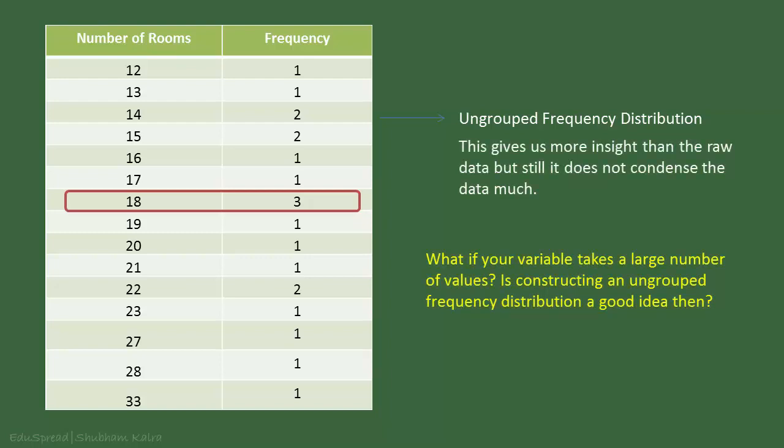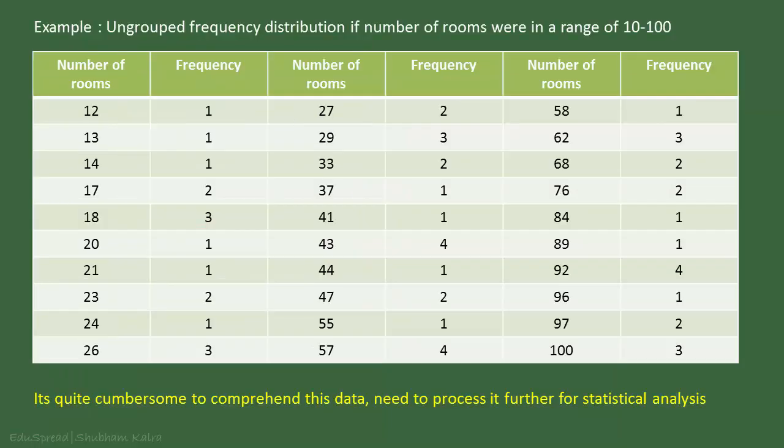The presentation of data in this form gives us more insight than the raw data. But still, it does not condense the data much. Also, if your variable takes values in a wide range — for example, if the number of rooms were in a range of 10 to 100 — then it becomes quite cumbersome to comprehend the data. It may look something like this. So in these types of cases, we will have to process the data further for statistical analysis.